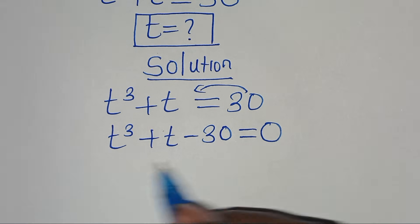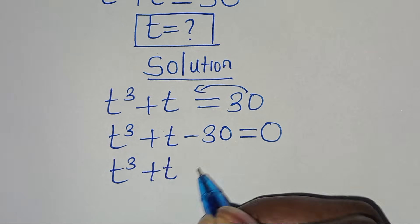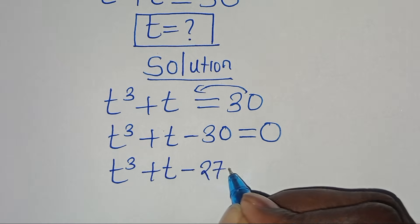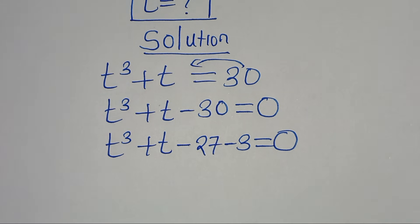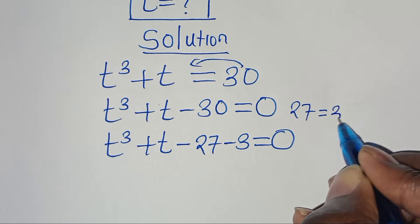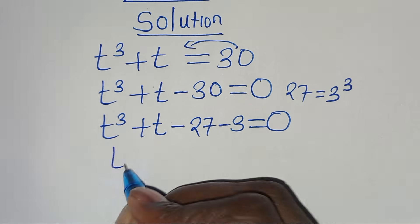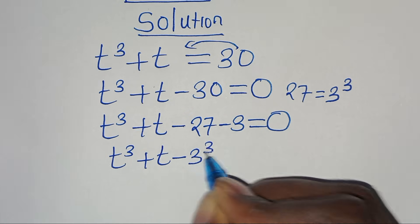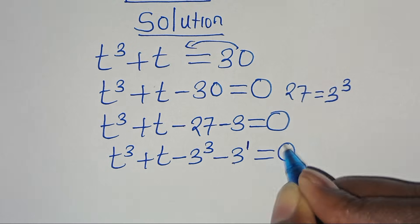Now we can express t³ + t - 30 by splitting -30 as -27 minus 3, giving us t³ + t - 27 - 3 = 0. We can then express 27 as 3 to the power of 3, so we have t³ + t - 3³ - 3, where 3 is 3 raised to the power of 1, equal to 0.